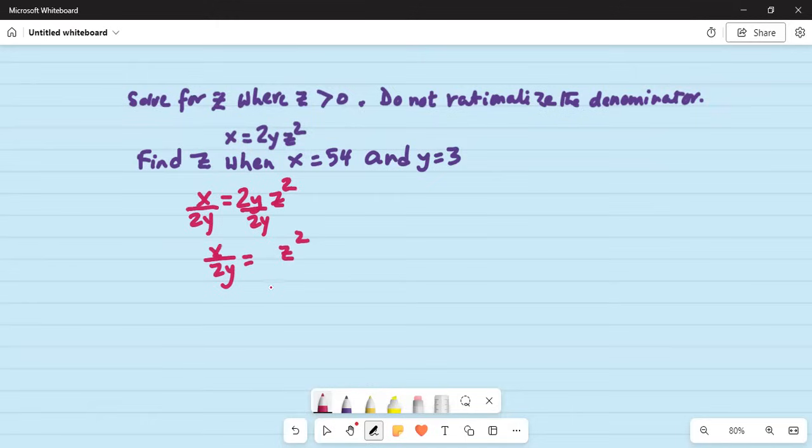Now, you have to take the square root on both sides. So, square root of x over 2y is equal to square root of z squared or square root of x over 2y is equal to z. Notice here, I did not consider the negative value of square root of x over 2y. Why? Because it is given z is greater than 0. That means z is positive.